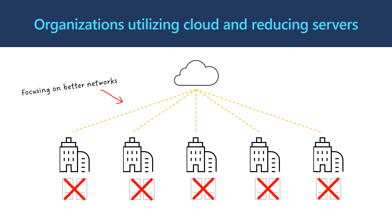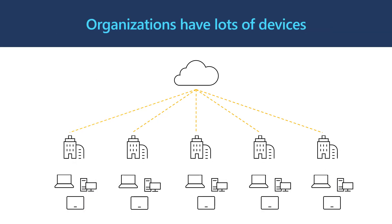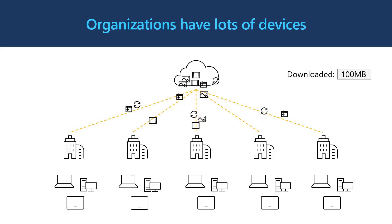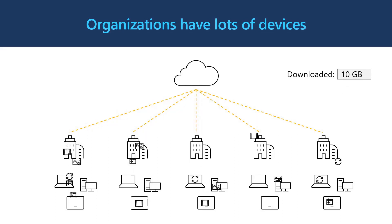Allowing organizations to reduce server infrastructure at remote sites and focus on providing high-speed, reliable internet. In a managed network, we aren't just worrying about one device anymore. We are typically worrying about lots of devices connecting to the internet from different work locations with varying speed and reliability. All that convenience of downloading data from the internet can start to have an impact on how quickly and reliably each of those devices can download content.